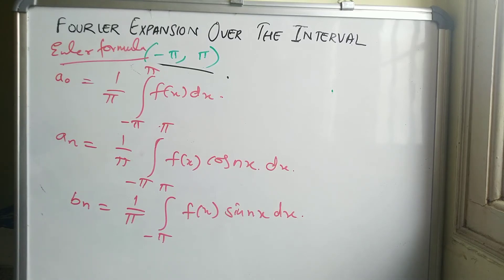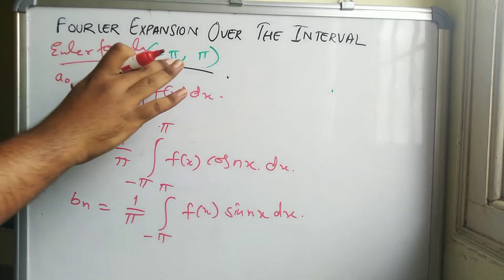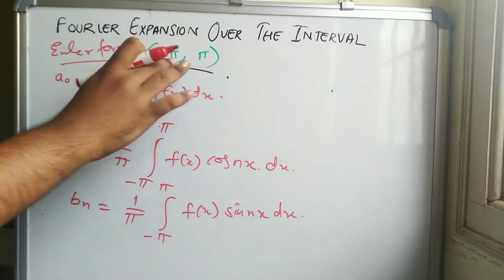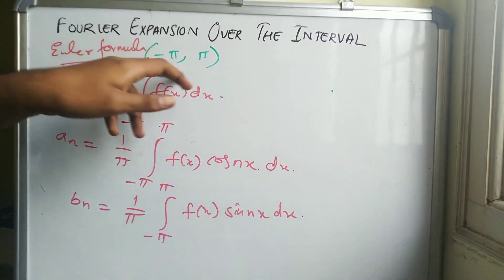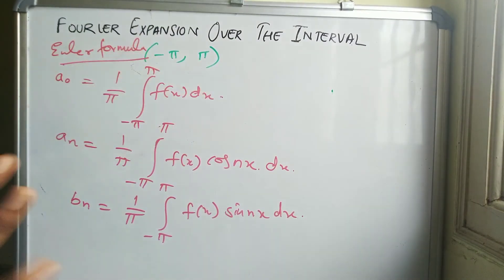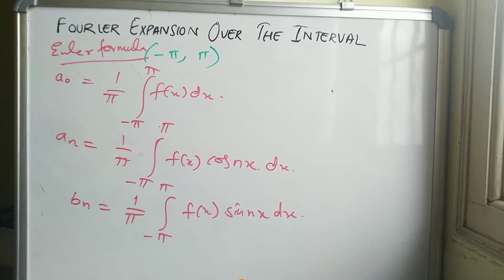So to summarize: starting from the general Fourier formula, you first find the value of l by comparing the standard interval with the given interval, then replace l in the expansion and coefficient formulas. We will now be solving some problems based on these formulas.